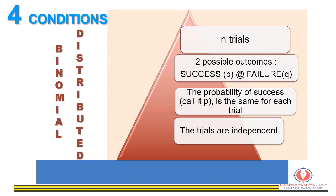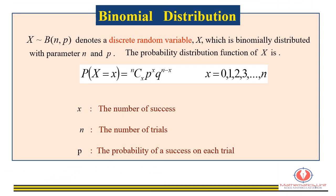The four conditions are: first, there are n trials; second, each trial has two possible outcomes — success or failure; third, the probability of success p is the same for each trial; and finally, the trials are independent, meaning the outcome of one trial does not affect the outcome of any other trial. Let x denote the number of successes in n trials.